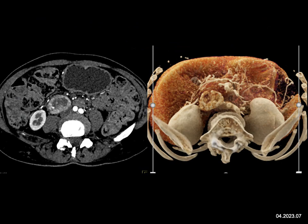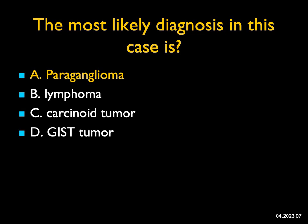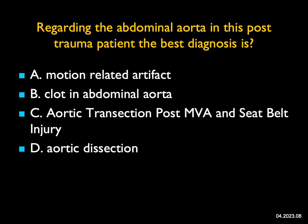The most likely diagnosis here — from the axials and 3D cinematic rendering we see a posterior right-sided mass that's vascular around the periphery with central necrosis. Lymphoma is usually not vascular; carcinoid or neuroendocrine tumor is a possibility; GIST tumors can be vascular arising from the stomach or small bowel. The best diagnosis is a neuroendocrine tumor — specifically this was a paraganglioma, which fits the location well.